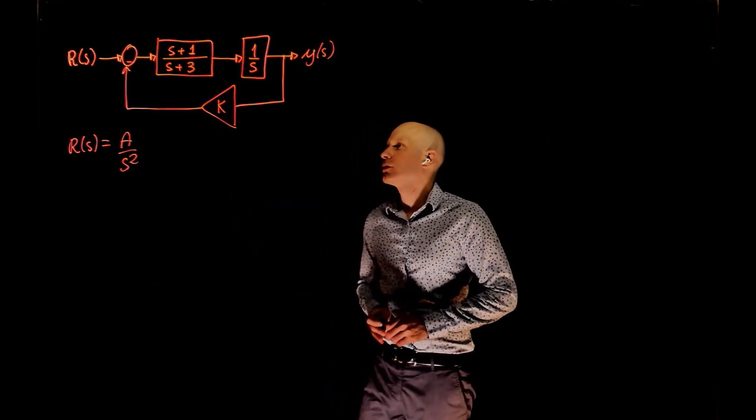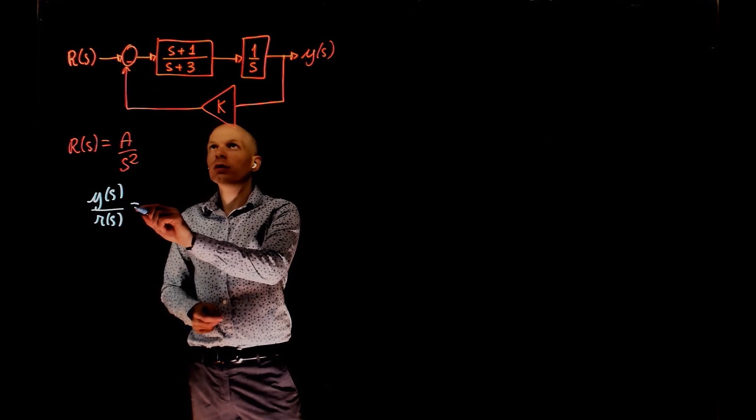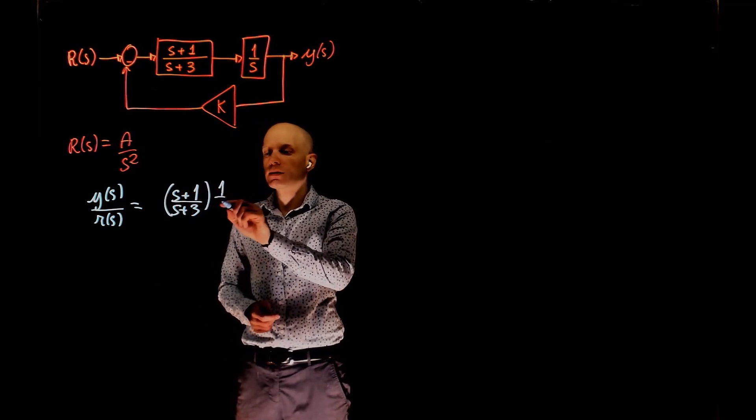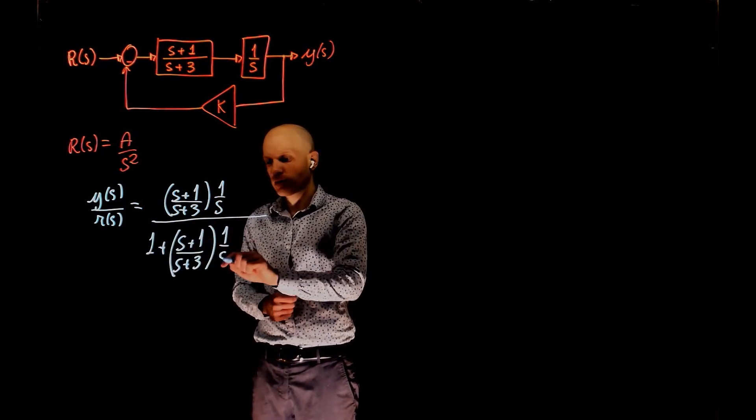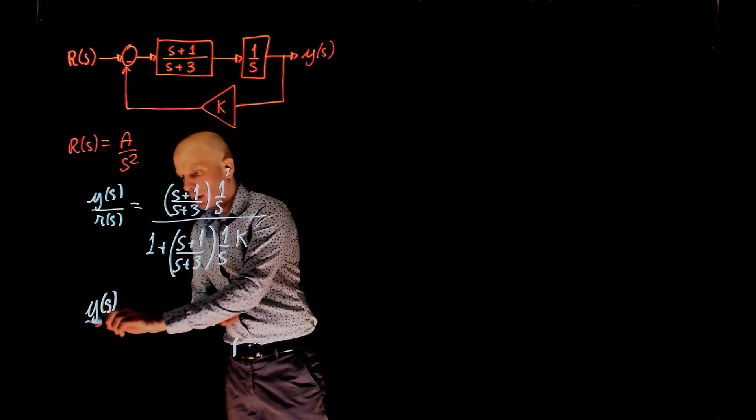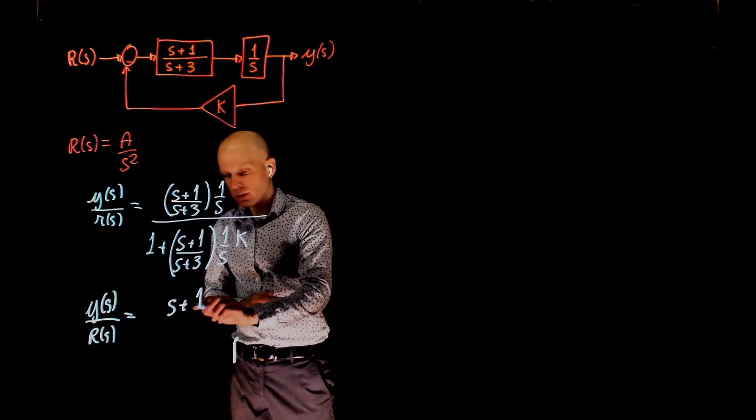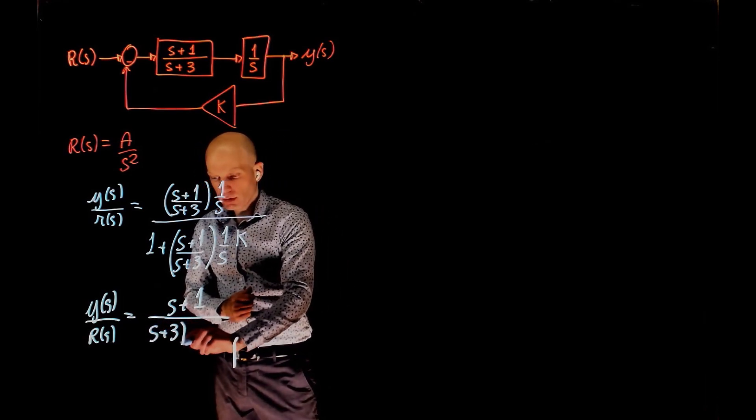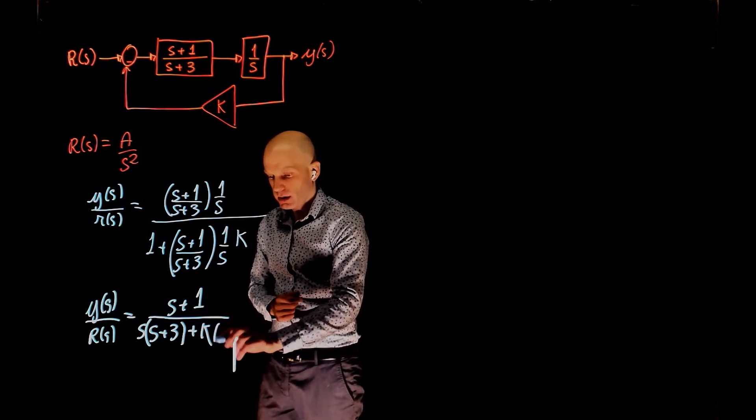In order to do that, we need to create the transfer function for this system. The transfer function here, y over r, is s plus 1 over s plus 3, times 1 over s, is the line function, divided by 1 plus the same function, times the feedback function k. Simplifying this leads to our final transfer function, which is s plus 1 over s plus 3, times s, plus k, times s plus 1.